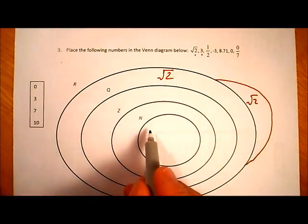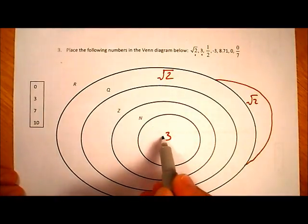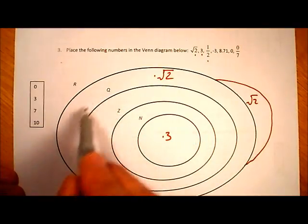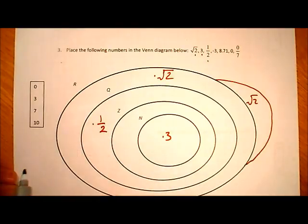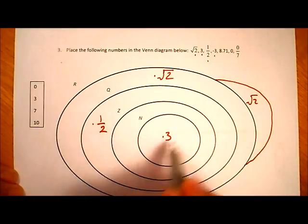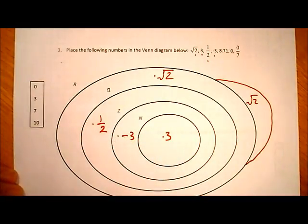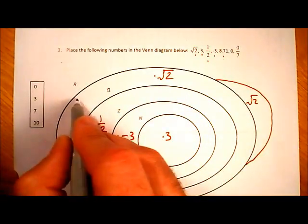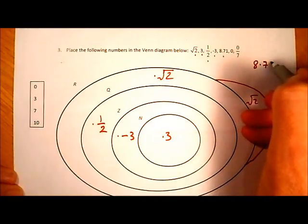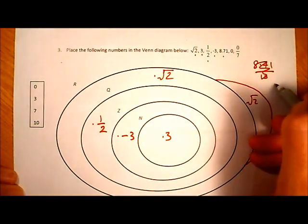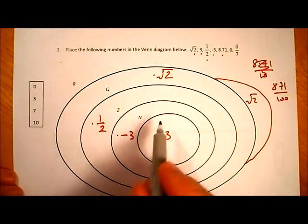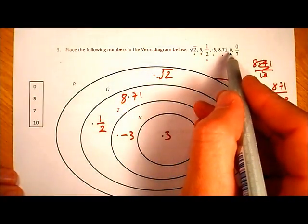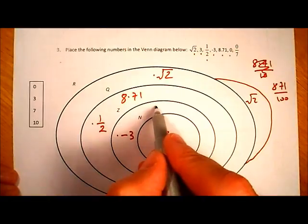The number 3 is a natural number, so it goes in the center. One half is not a natural number or an integer, but it is a fraction, so it goes in the rational section. Minus 3 is not a natural number but it is an integer. The number 8.71 can actually be written as 871 over 100, so it is a rational number. Zero is not a natural number but it is an integer.